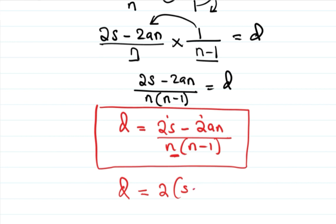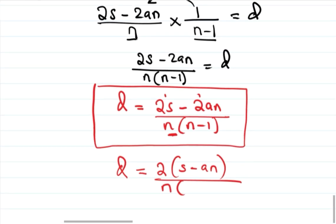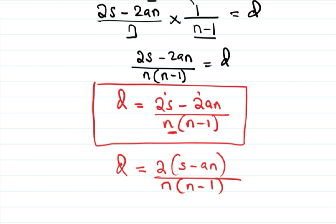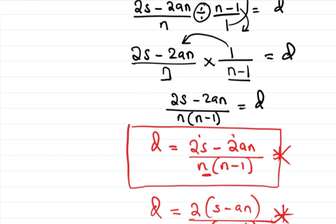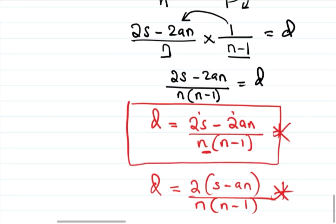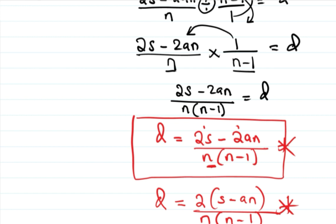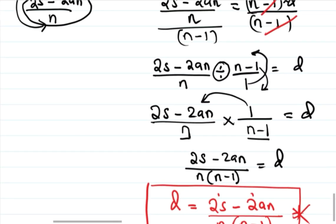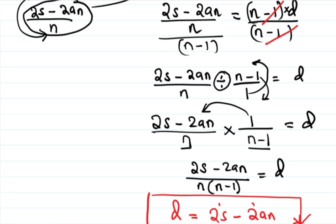The answer can also be written in a factorized form as D equals 2 times S minus an, all over n times n minus 1. That's the solution. If you have enjoyed the video, please don't forget to subscribe to my channel and like my Facebook page, Unique Online Classes. If you have any questions, you can get my contact on Facebook or my YouTube channel. Thanks for watching and I wish you all the best.